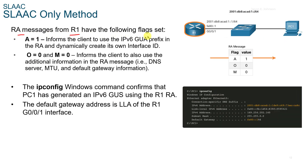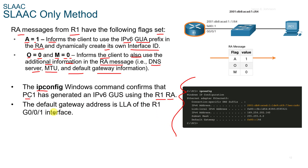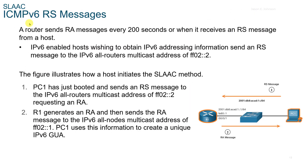RA messages from R1 have the following flags set: A equals 1, which informs the client to use the IPv6 GUA prefix in the RA and dynamically create its own interface ID. O equals 0 and M equals 0, which informs the client to use additional information in the RA message such as the DNS server, the MTU, and the default gateway. The ipconfig command confirms that PC1 has generated an IPv6 GUA using the R1 RA, and the default gateway address is the LLA of the R1 G0/0/1 interface.